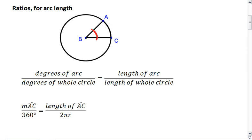Whatever angle this is here, that tells us what fraction of the circle we're working with. For example, if this is 40 degrees, then we're working with 40 out of 360 possible degrees.